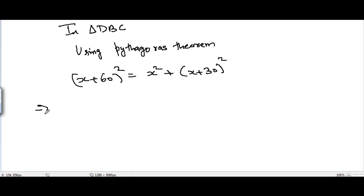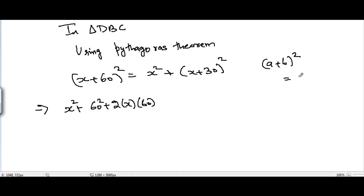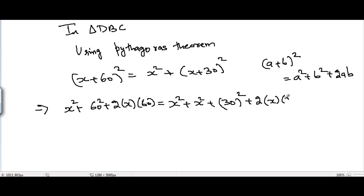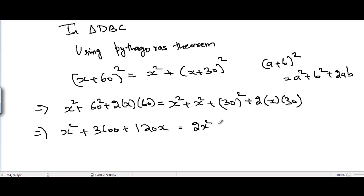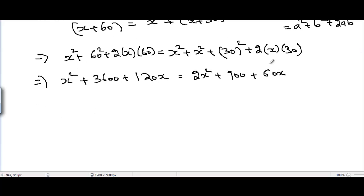Expanding the left side using (a + b)² = a² + 2ab + b²: (x + 60)² = x² + 3600 + 120x. Expanding the right side: x² + (x + 30)² = x² + x² + 900 + 60x = 2x² + 900 + 60x.